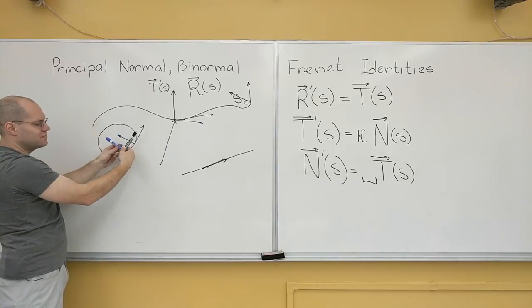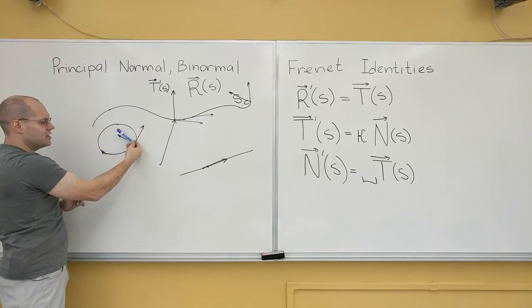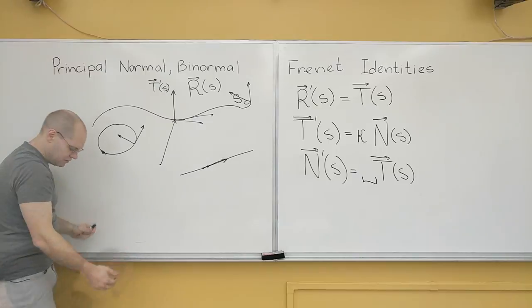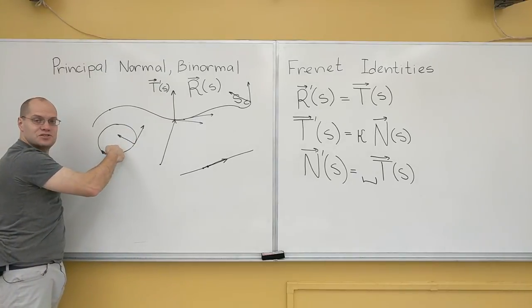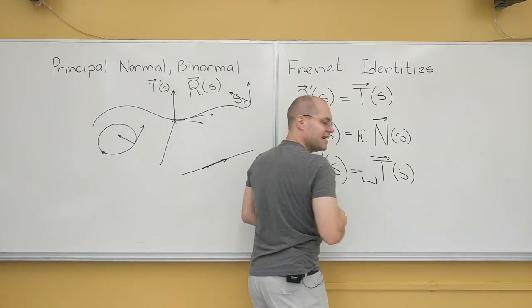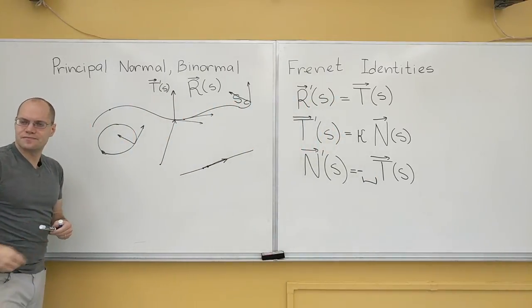There's your minus sign. You see that intuitively as this curves around the curve. This changes in counterclockwise direction. So at this point, the derivative will point this way. You guys are with me on that? So minus, minus the tangent, okay?